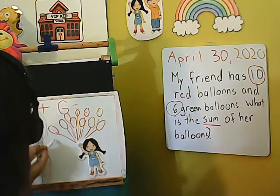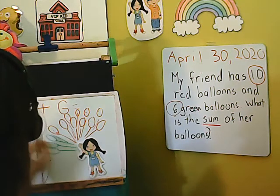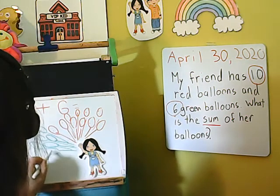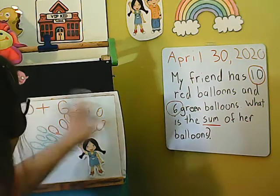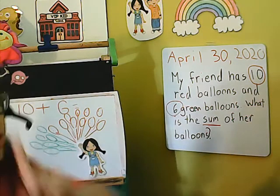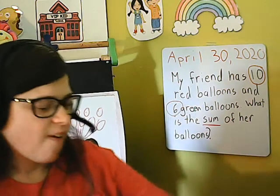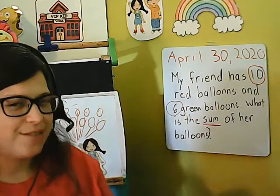Here is my green. 1, 2, 3, 4, 5, 6. So she has 6 green balloons and 10 red balloons. We can count them all together — that is one way we can solve it, but today I thought we should look at our ten frames again.